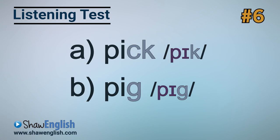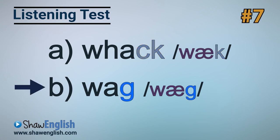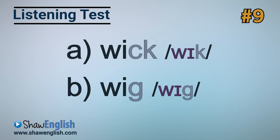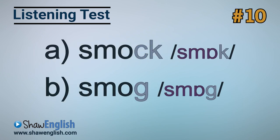Next: pig. Pig. Word B is correct — pig. Word A is pick. Listen: whack. Whack. Answer A is correct — whack. B is wag. Next: slack. Slack. The word is A — slack. B is slag. Next: wig. Wig. Answer B is correct — wig. Answer A would be wick. Finally, listen: smock. Smock. It's answer A — smock. Smog would be answer B.